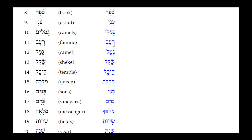Number eleven: Gamal — camel (singular). The Kamets under the Mem reduces to a Patak (closed unaccented syllable), and the Kamets under the Gimel reduces to a Sheva (open unaccented syllable). Result: Gamal. Number twelve: Shekel — segolate noun, so the construct form is Shekel, the same as absolute.